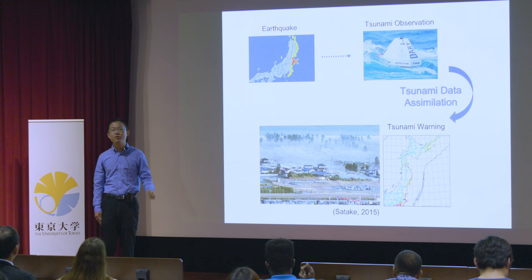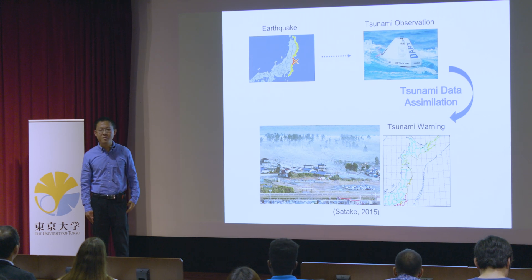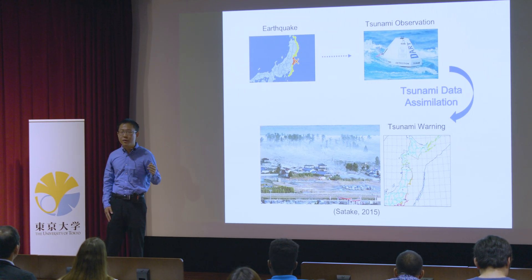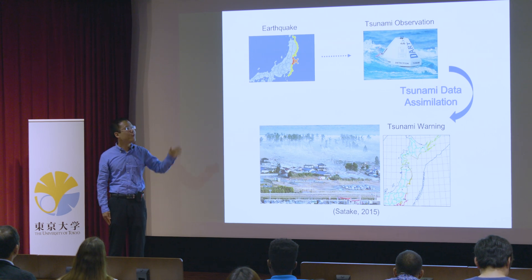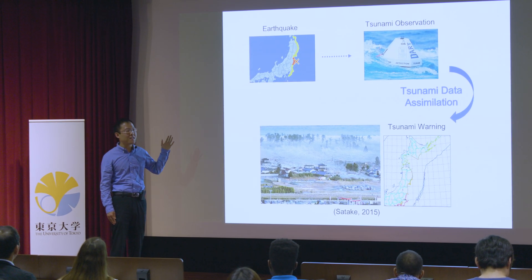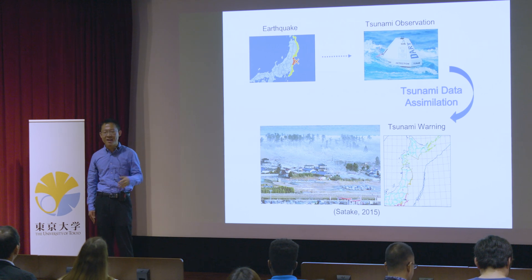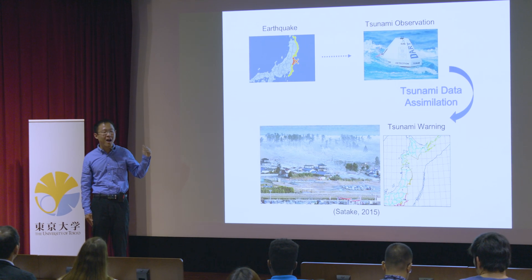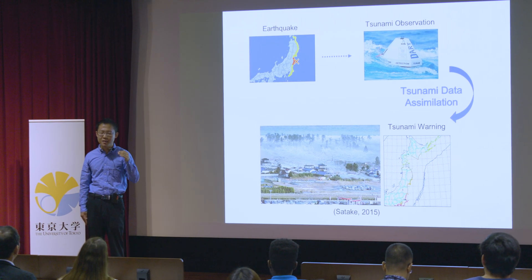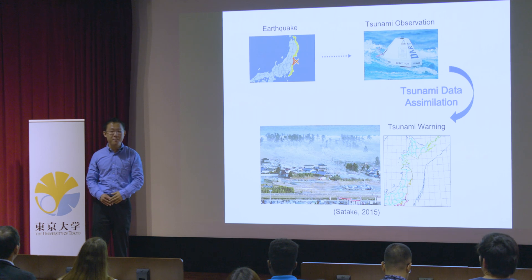Because in the Pacific Ocean there are also such tsunami sensors. For example, if a huge earthquake happened in Chile, we can use this method to forecast the tsunami in Australia and make an early tsunami warning for Australian people.